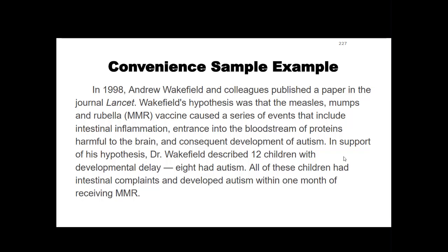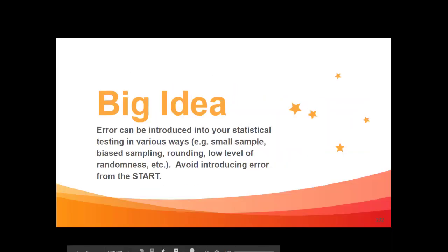Looking at that information with skepticism could have saved a lot of kids from not getting their vaccines. So what's the big idea? Error can be introduced into your statistical testing in a variety of ways — a small sample size, biased sampling, rounding, or a low level of randomness. You want to avoid introducing error from the start. Don't forget to check your emails, check Blackboard, do your homework, and subscribe to this channel — hit that notification bell for new videos. Stay safe — this is your teacher Torres, and I'll be waiting to give you a virtual elbow bump in the next video.